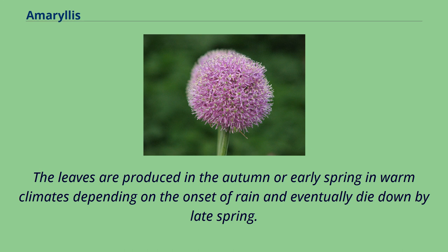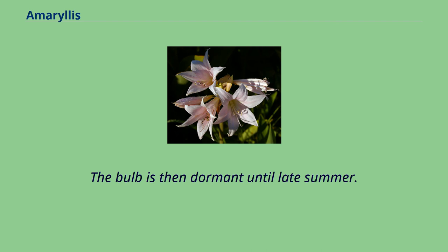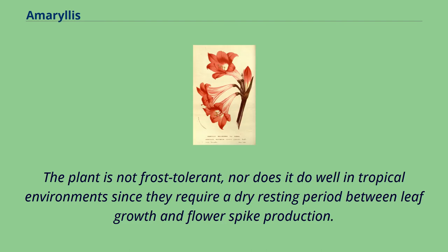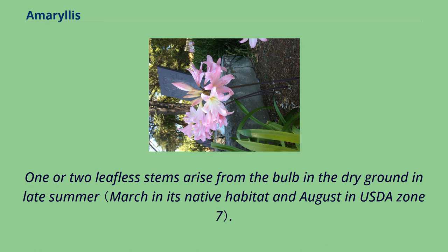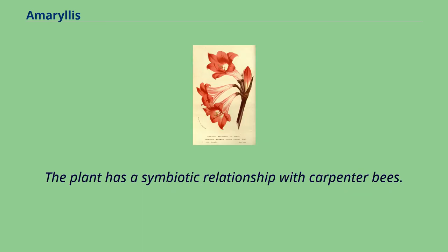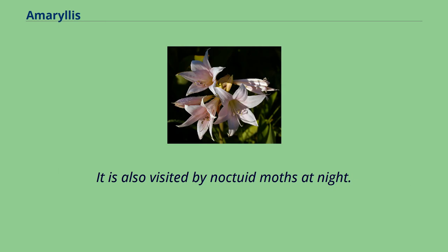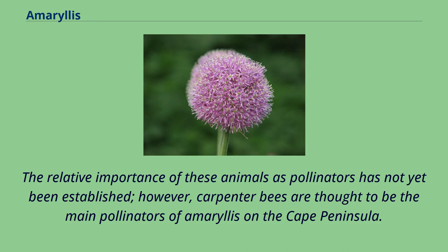The bulb is then dormant until late summer. The plant is not frost tolerant, nor does it do well in tropical environments, since they require a dry resting period between leaf growth and flower spike production. One or two leafless stems arise from the bulb in the dry ground in late summer. The plant has a symbiotic relationship with carpenter bees and is also visited by noctuid moths at night. The relative importance of these animals as pollinators has not yet been established; however, carpenter bees are thought to be the main pollinators of Amaryllis on the Cape Peninsula.